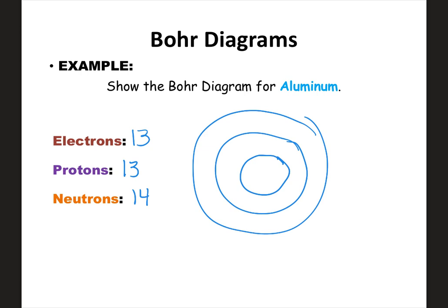We label 13 protons and 14 neutrons in the center to represent the nucleus. Now we show 13 electrons as dots. The first energy level can only hold two, so we draw two and label that nearby. The second can hold at most eight, so we fill that and label eight nearby — that puts us at ten. There are only three remaining, so the third ring gets three dots, giving us our total of 13 electrons. That's the Bohr diagram for aluminum.